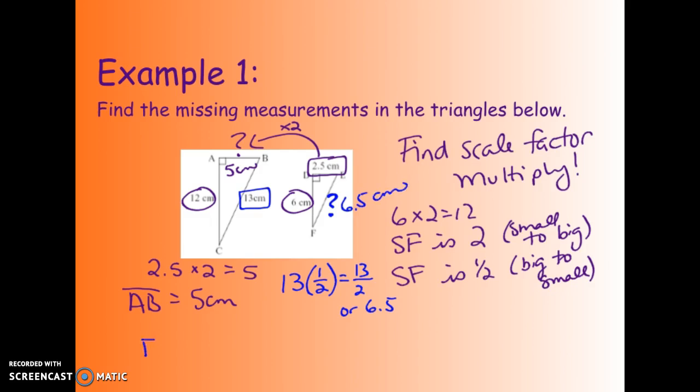So I might say FE equals 6.5 centimeters. So you found both corresponding sides that are missing, and you found that just by multiplying the side that you know by its scale factor.